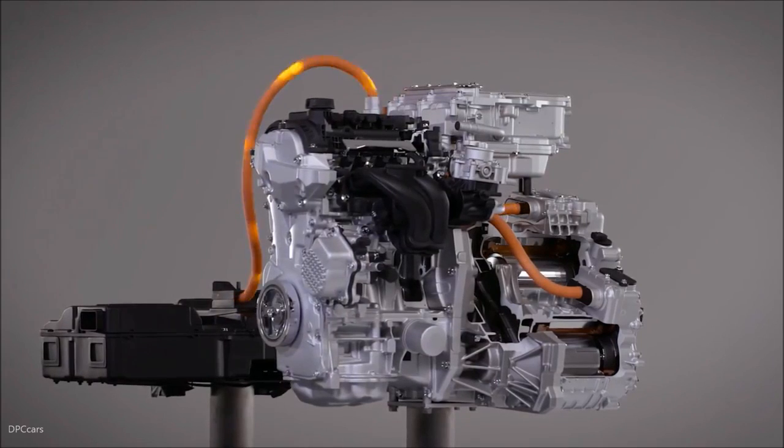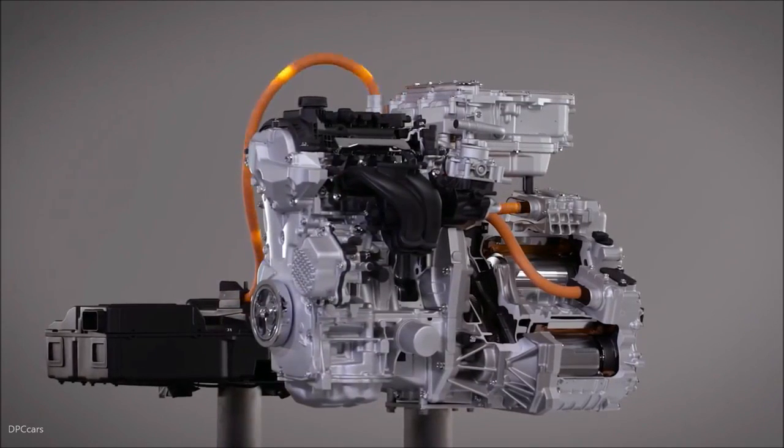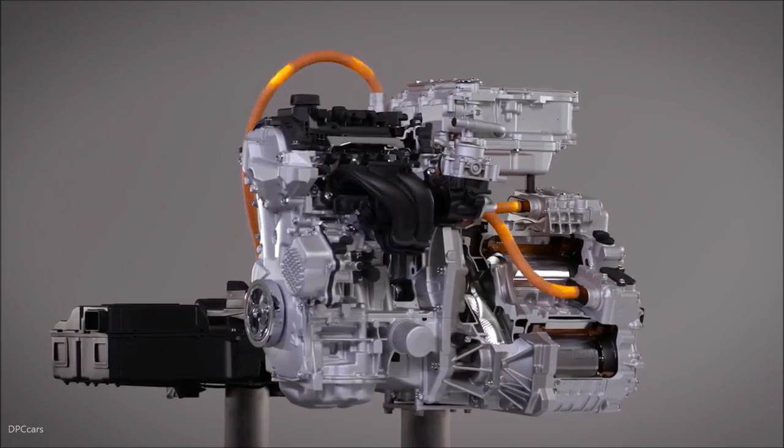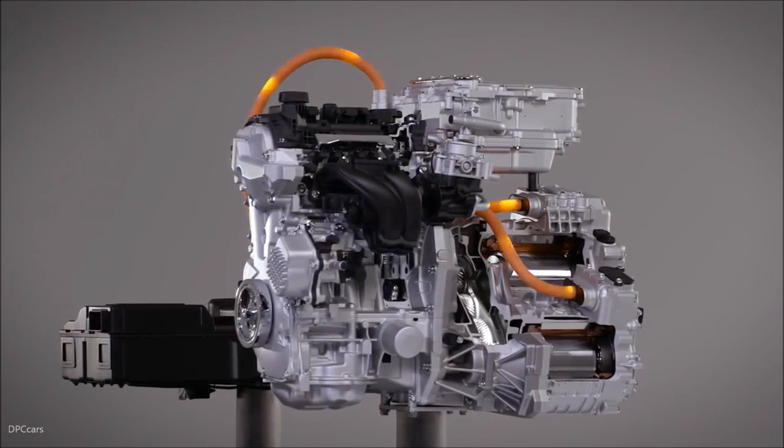The power from a high-output battery is delivered to the ePower's compact powertrain comprised of a gasoline engine, power generator, inverter, and a motor.